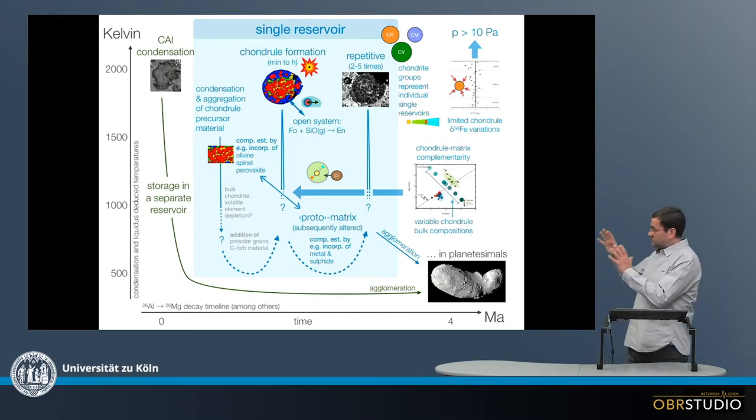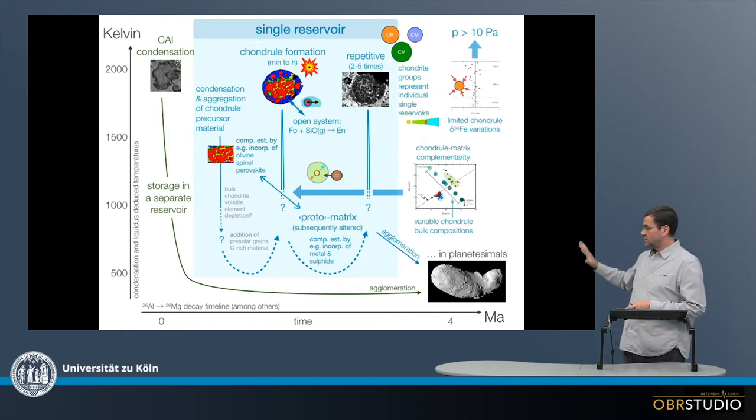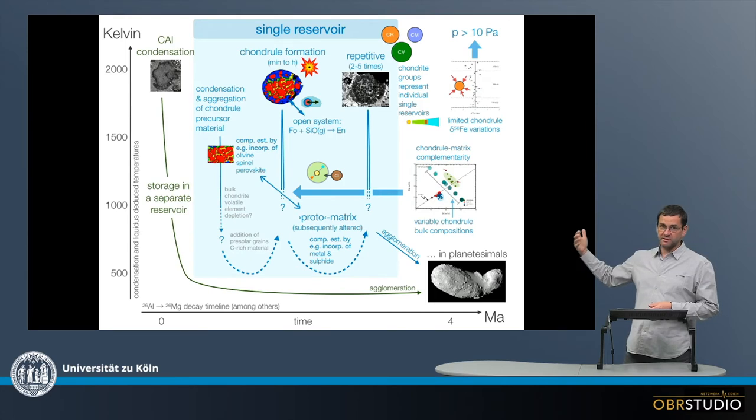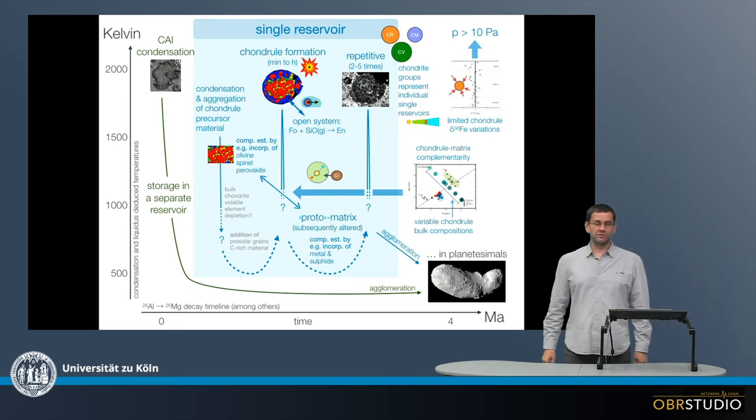So this is the possibility for framework of the early solar system. And again, this is based on a selection of evidence, more could be added, some could be brought up that is conflicting with details here. But in general, this seems to be a good starting point to understand the events in the early solar system.